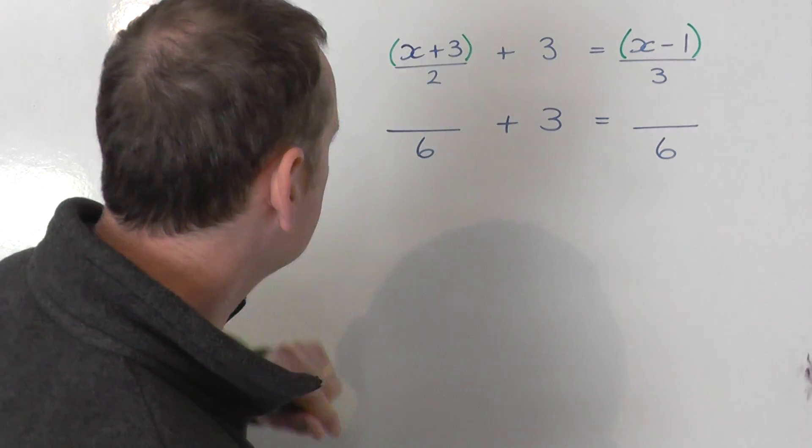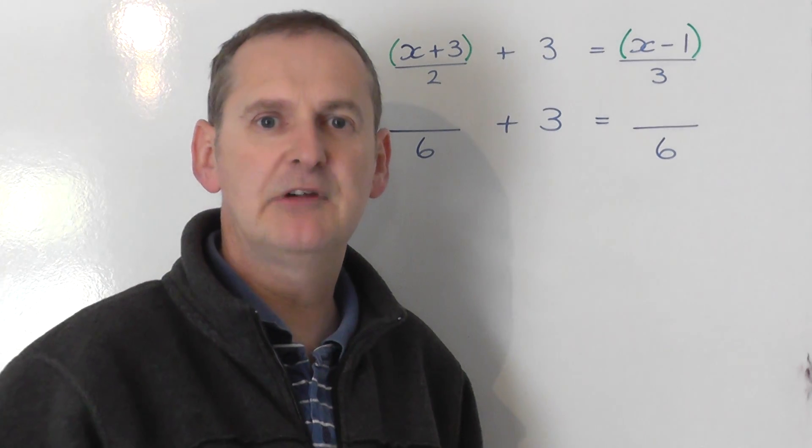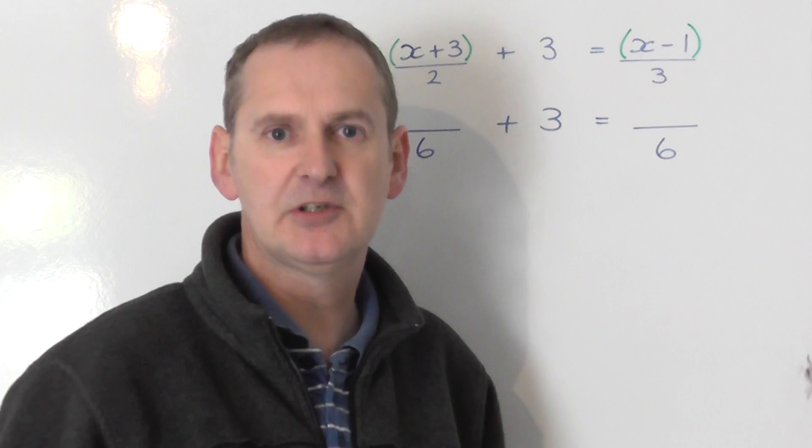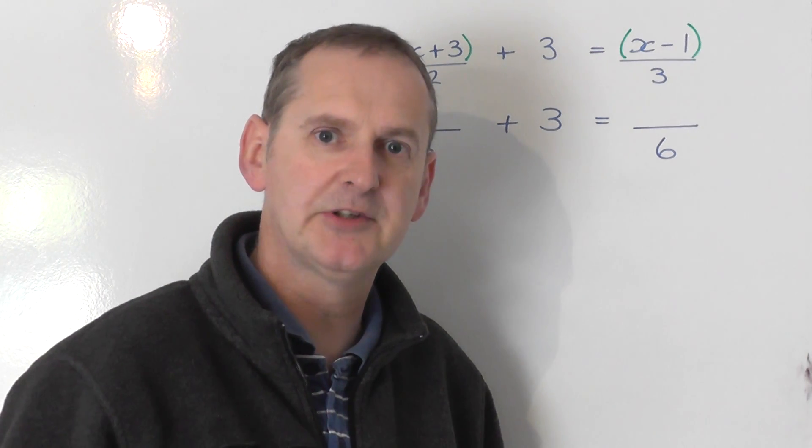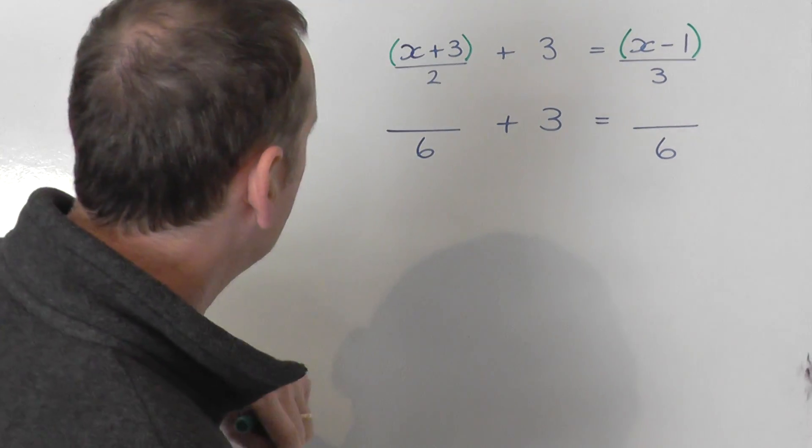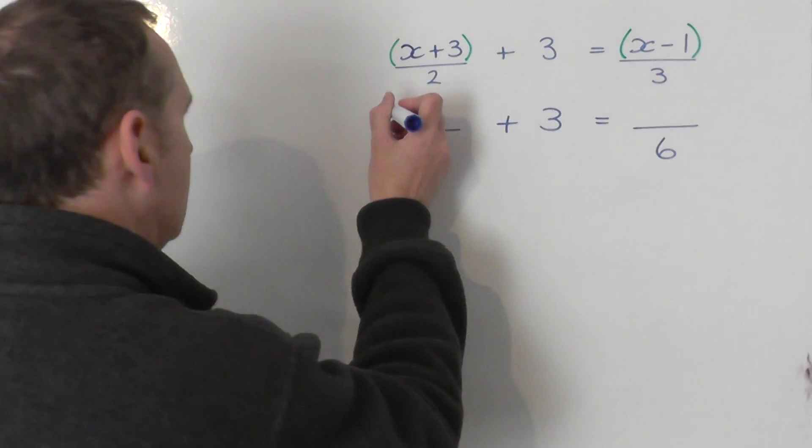This fraction here is over 2 to begin with. To change it into a 6, I need to treble it. To keep the fraction the same, I need to treble the top line as well. In a similar sort of way, that a half is the same as 2 quarters, if you double the top and double the bottom. So if I treble the bottom, I get 6, so I need to treble the top. Now, the top line is all of that bracket, so I need to treble the whole thing.